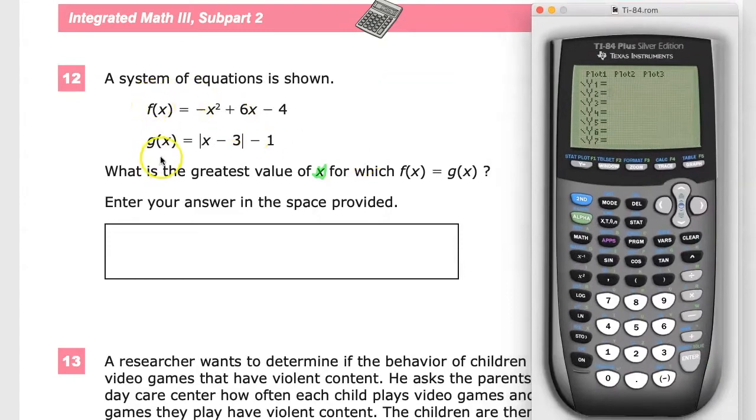So when I'm looking for f(x) is equal to g(x), what I'm saying is what points do they share in common? What are their points of intersection? That's the big deal.